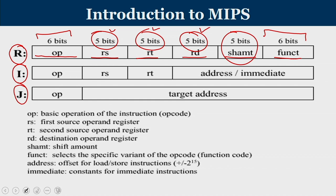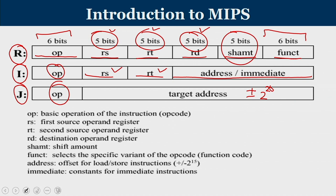For I-type instructions, the last 16 bits represent a portion of an address or an immediate value. The first 6 bits are opcode, with one source register and one base register. For J-type jump instructions, a 6-bit opcode is followed by a 26-bit target address, permitting jumps of plus or minus 2^26. So R-type has 3 register operands, I-type has 2 registers and a 16-bit immediate or address, and J-type has a 26-bit relative jump address.